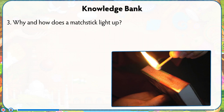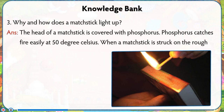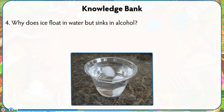Number 3: Why and how does a matchstick light up? Answer: The head of a matchstick is covered with phosphorus. Phosphorus catches fire easily at 50 degrees Celsius. When a matchstick is struck on the rough side of the matchbox, the friction generates enough heat for the stick to light up.